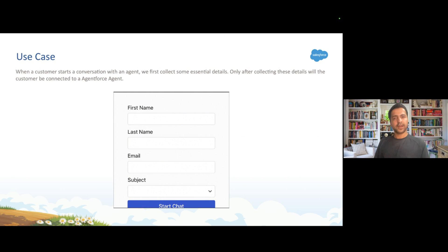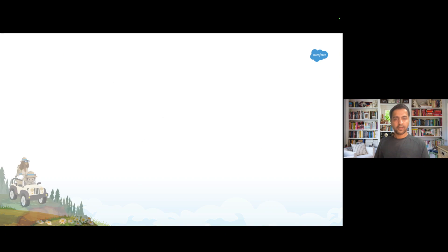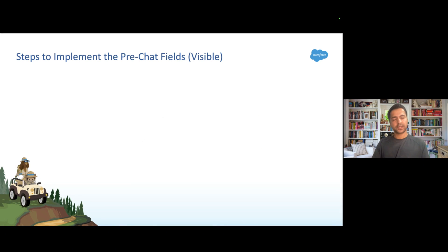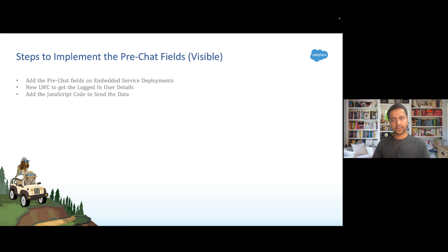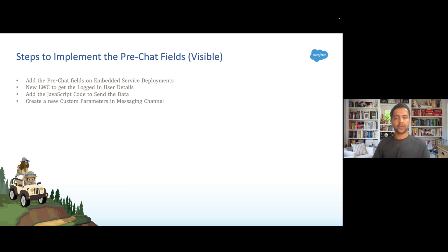We are going to add some pre-chat fields in our agent. There are a couple of steps we need to perform. First, we need to add the pre-chat fields on embedded service deployment. Then we need a lightning web component to get the logged-in user details. Then we also need some JavaScript code to pass the user data to the agent. Then we are going to create some parameters in the messaging channel so that we get the values in our pre-chat input fields.